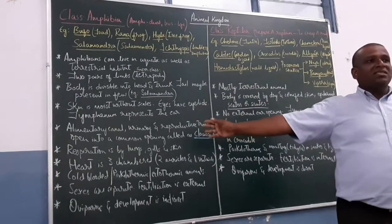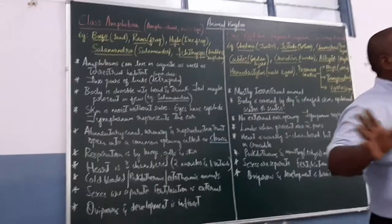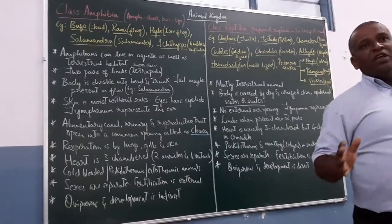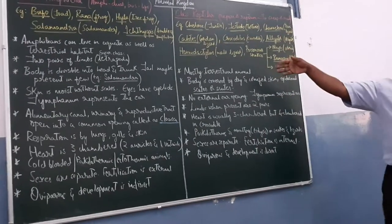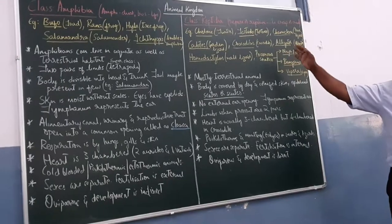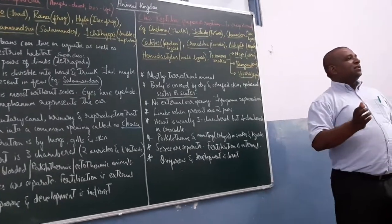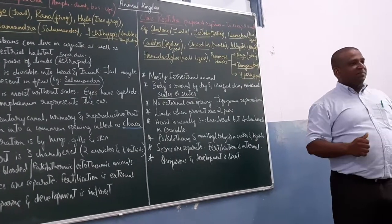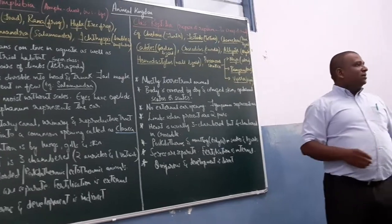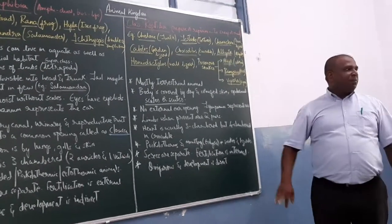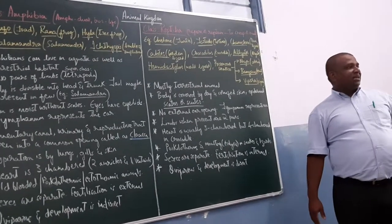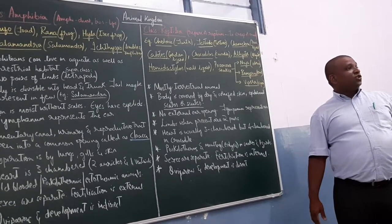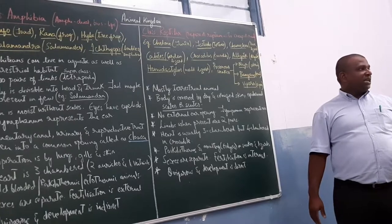These are the characteristics or salient features of class Amphibia. Next one is class Reptilia. Reptare or Reptor implies crawling or creeping animals. They are crawling or creeping animals. Examples for that is quinole, turtle, then there is tortoise, testudo, we call it as tortoise.